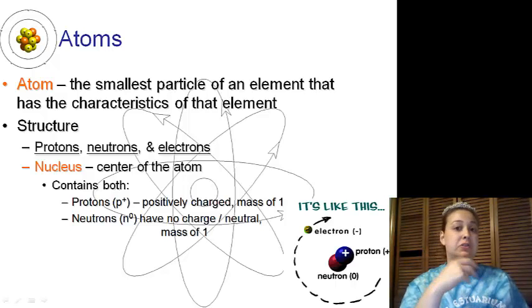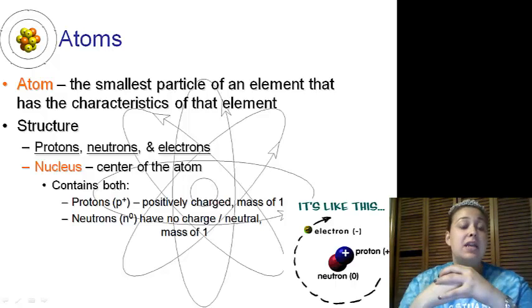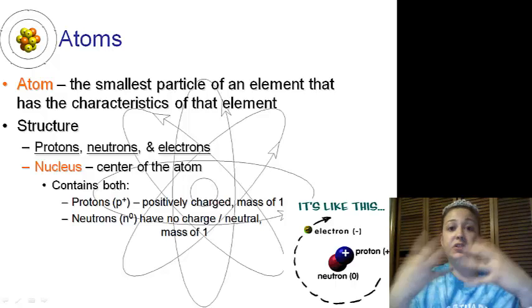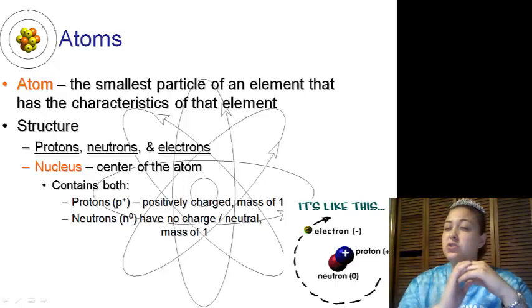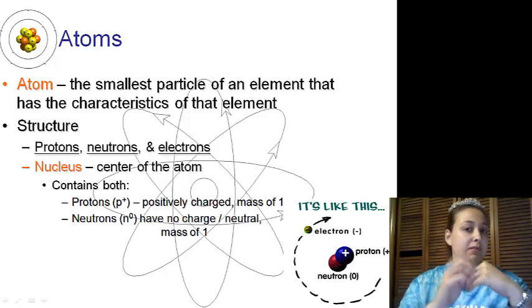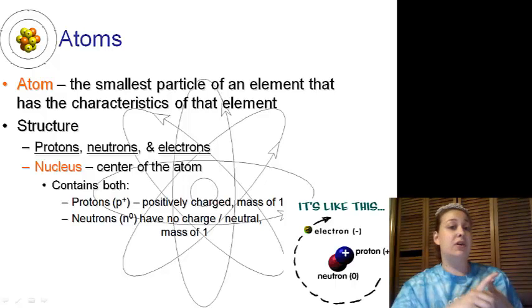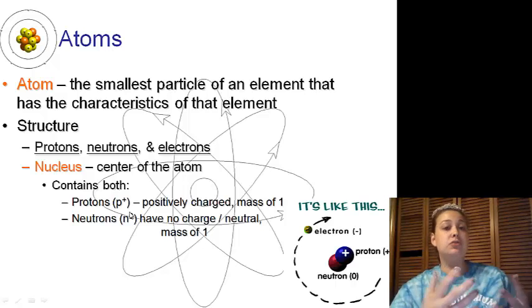Its structure is going to be protons, neutrons, and electrons. This should be reviewed, so take down what you need. The nucleus contains the protons and neutrons. You'll see them written as P+ and n0. Protons are positive, neutrons are neutral.